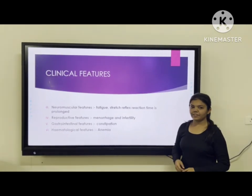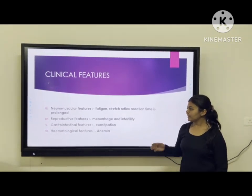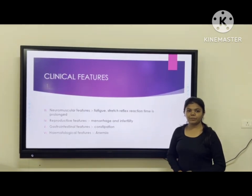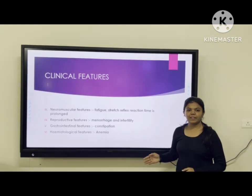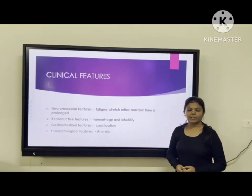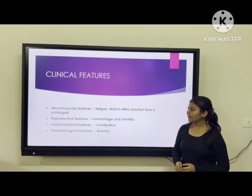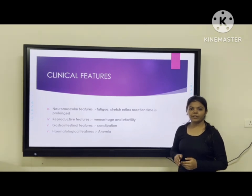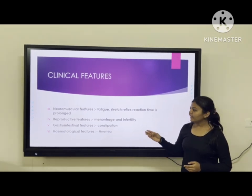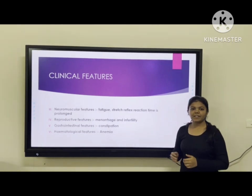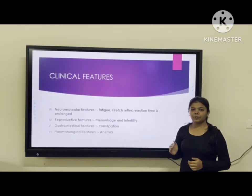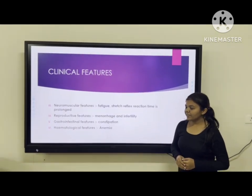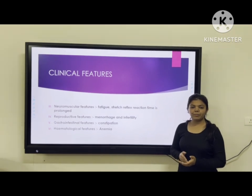There are also neuromuscular features like fatigue and slow reflex reaction time, because thyroid hormone is involved in myelin sheath formation, and due to hypothyroidism there is deterioration of the myelin sheath, so impulses cannot transmit as fast. Second, reproductive features include infertility due to decreased production of thyroid hormone. Third, gastrointestinal features include constipation, as hypothyroidism leads to slow movement of the GI tract. Fourth, hematological features include anemia due to decreasing levels of vitamin B12.